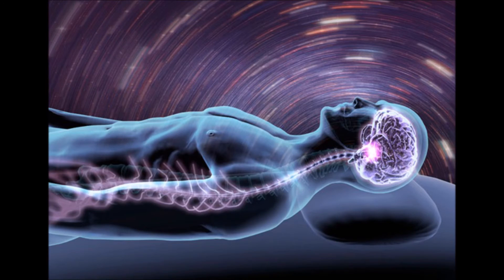When you sleep and dream, in your dream you can move in certain directions, so there is space. And in your dream, things don't happen all at once, but in succession, so there is also time.